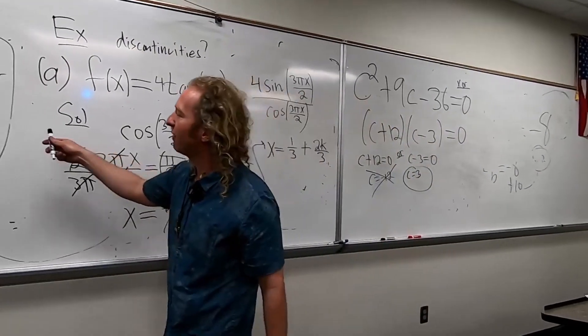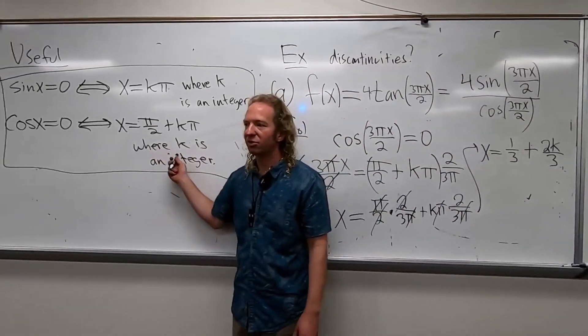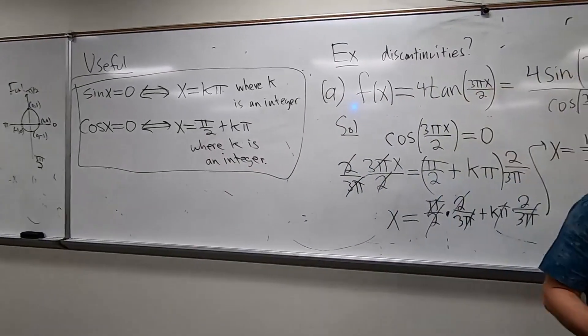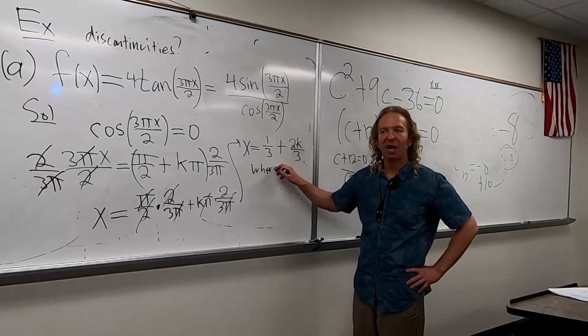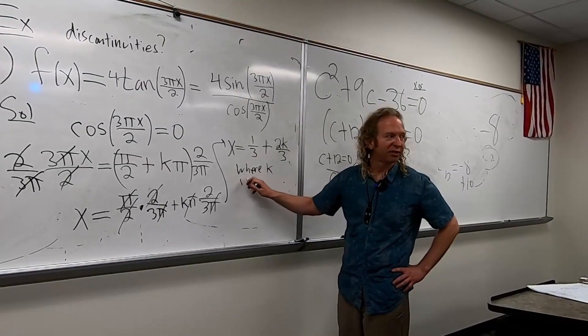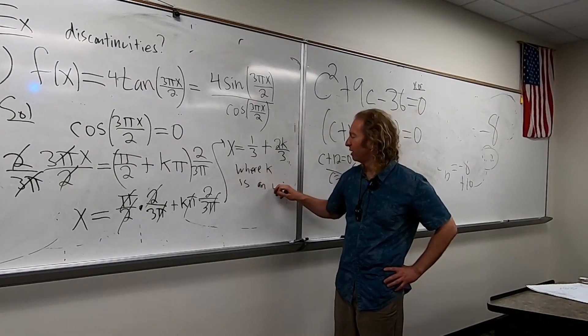And we forgot to say something. We still have to say this. Right? This k is an integer. So it's important to say that. It's not true for all k. Just when k is an integer. So where k is an integer.